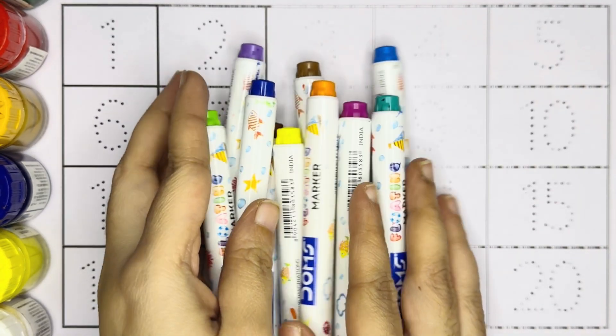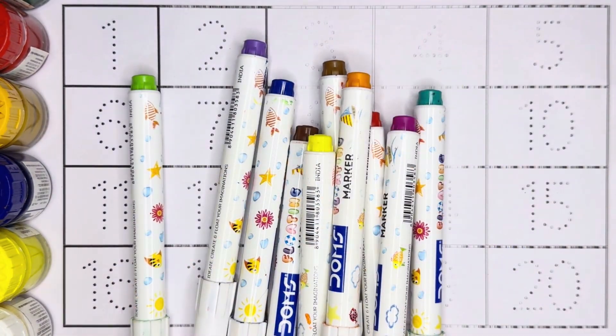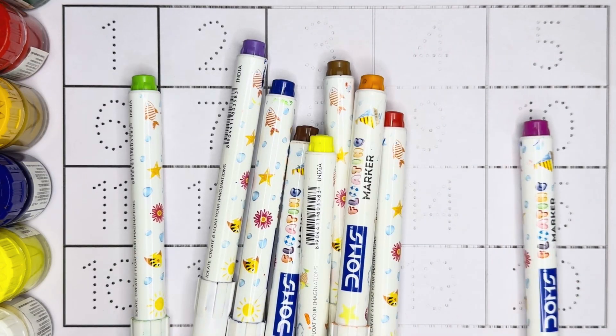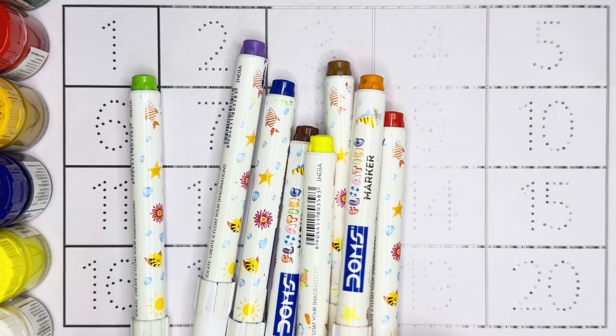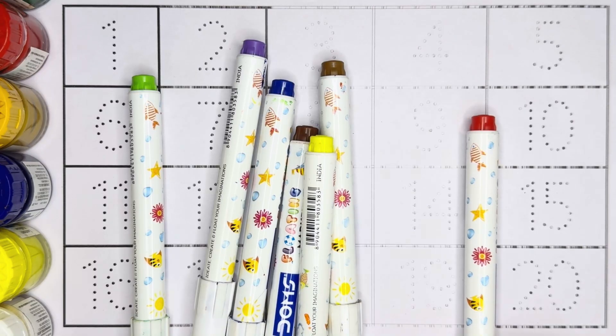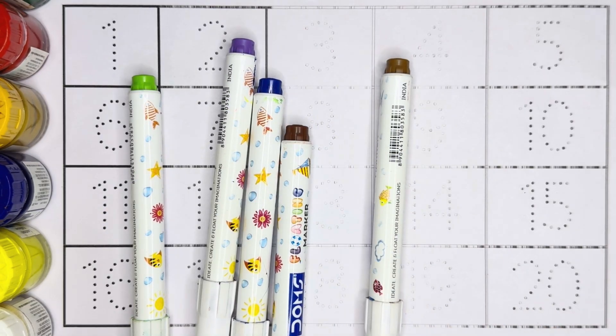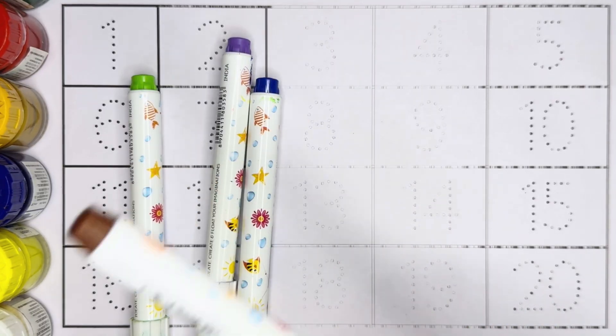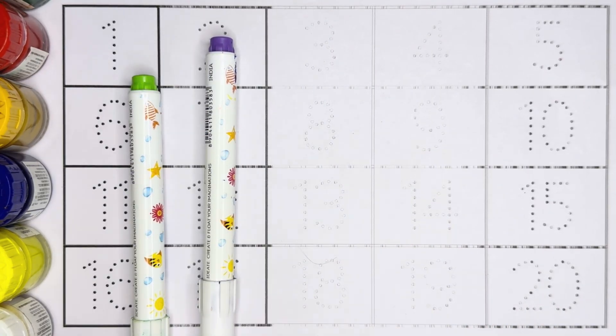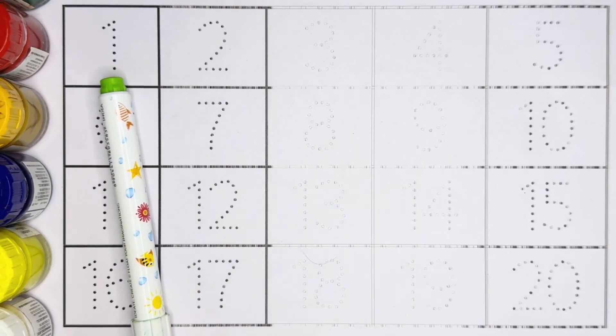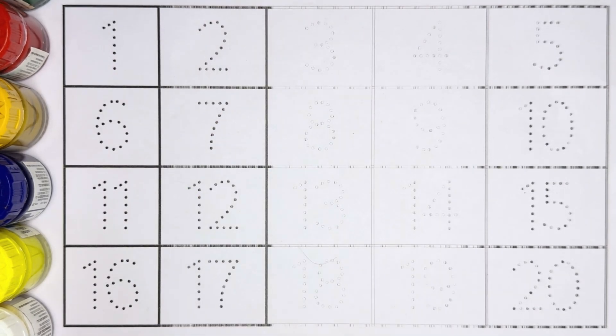First let's learn name of the colors. These are the colors kids. Light blue color, dark green color, dark pink color, orange color, red color, yellow color, dark brown color, light brown color, blue color, violet color, light green color.